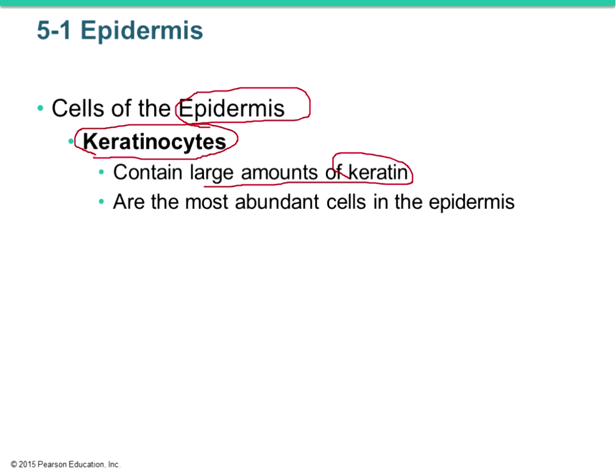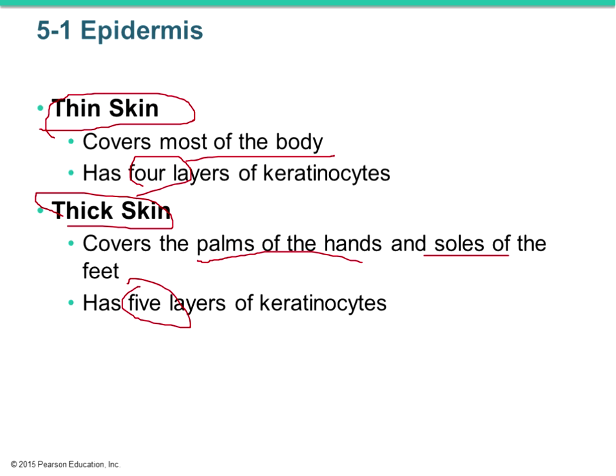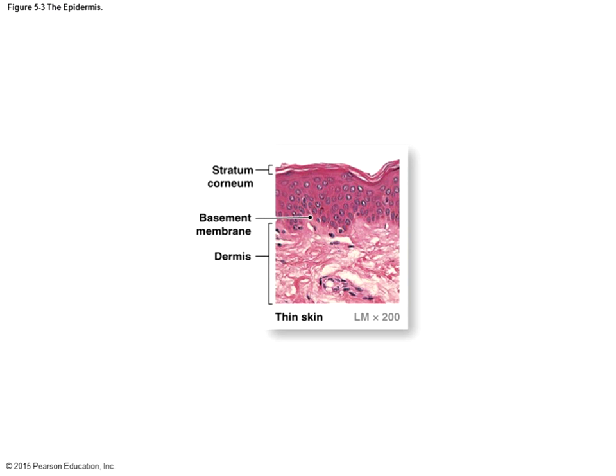Skin is actually considered to be two types: thin or thick skin. Thin skin covers most of the body and has just four layers of keratinocytes, whereas thick skin is found on the palms and soles and has five layers. In our discussion we'll focus on thick skin so we can see all the layers, but most of your body is actually thin skin.